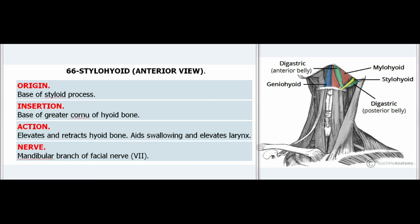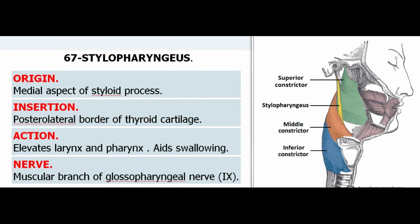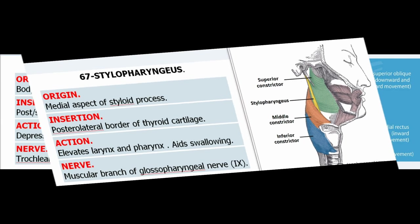67. Stylopharyngeus. Origin: Medial aspect of styloid process. Insertion: Posterolateral border of thyroid cartilage. Action: Elevates larynx and pharynx, aids swallowing. Nerve: Muscular branch of glossopharyngeal nerve (IX).